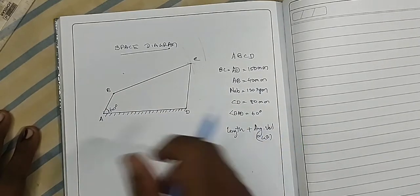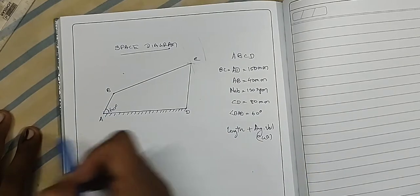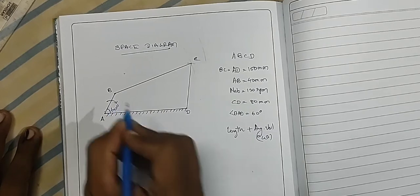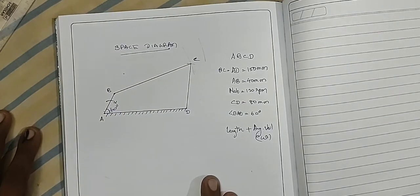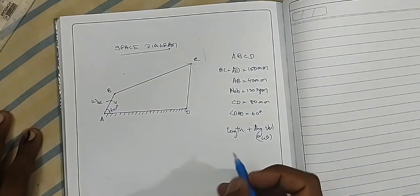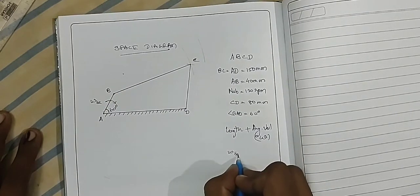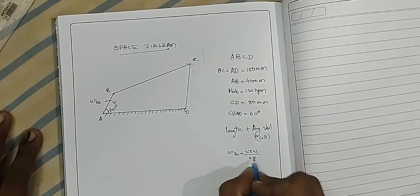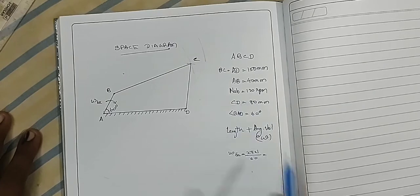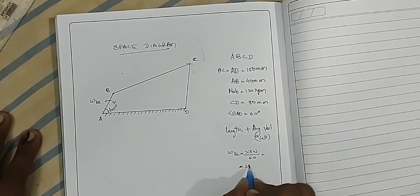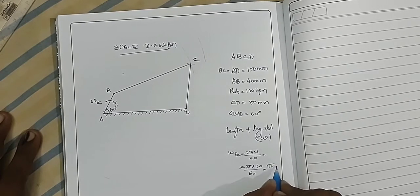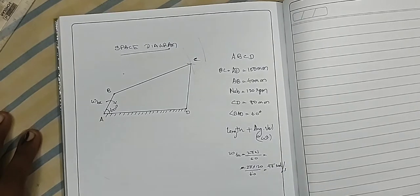Looking at the link AB — AB is rotating in the clockwise direction with angular velocity omega_BA. Omega_BA will be equal to 2πN divided by 60. With N equal to 120 rpm, that gives 2π × 120 divided by 60, which equals 4π radians per second.